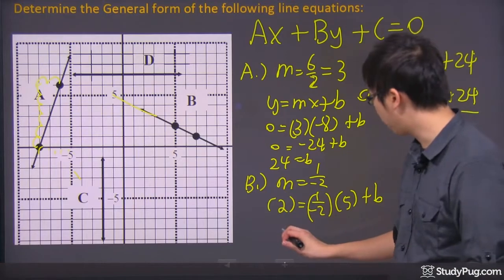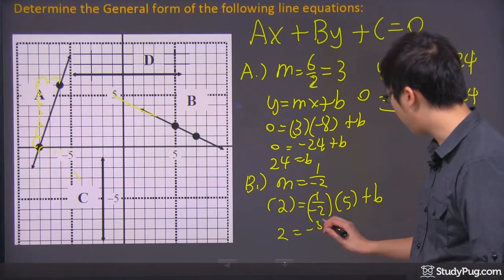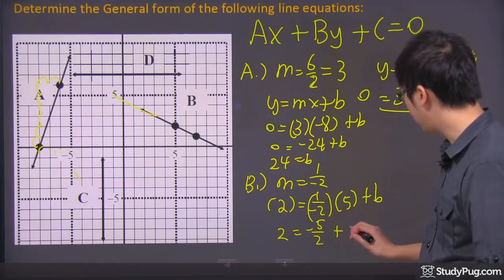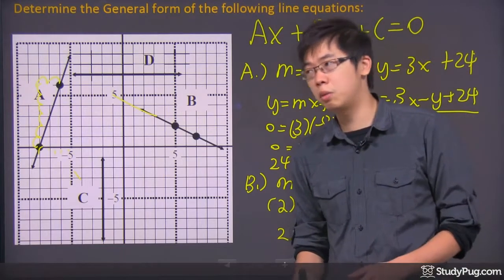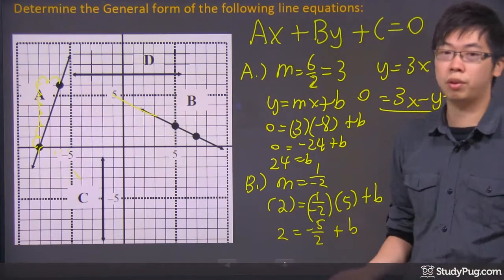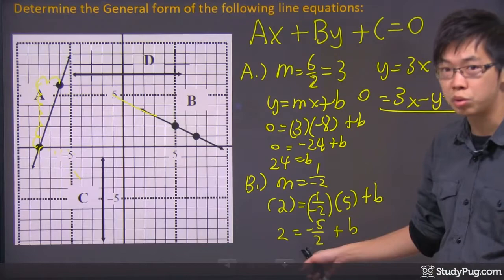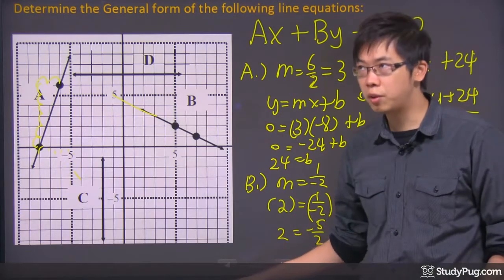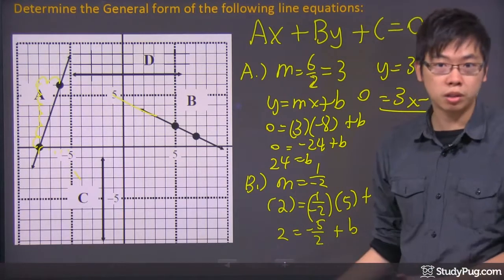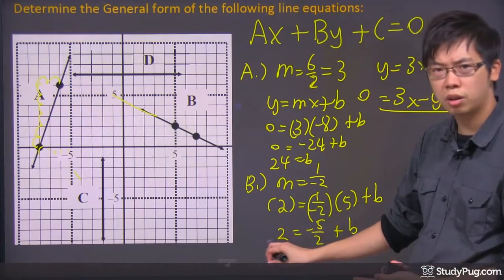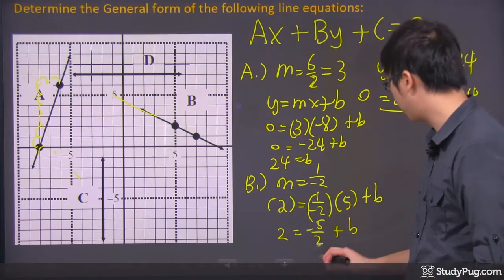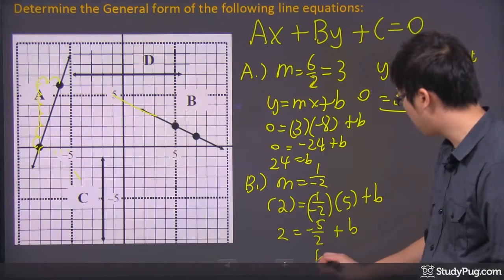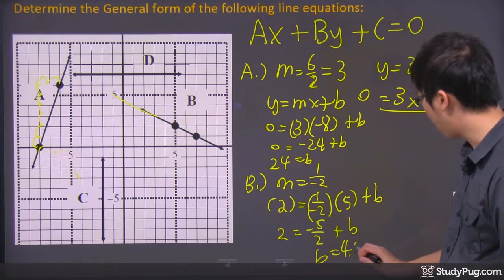So I'm going to put the 2 over here equals to negative 1 over 2, which is my slope, and the X will be a positive 5, because this is a 5 and a 2, right? Remember, this is 5, 2. And here's my B that's missing. So if I do the math right here, I got a 2 and a negative 5 over 2 plus the B. Now, 5 over 2 is almost like saying that it's a 2.5. So this is a negative 2.5.